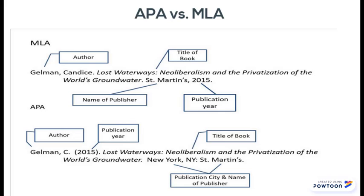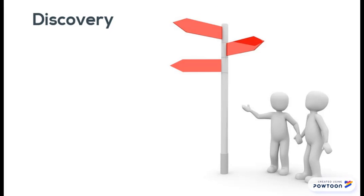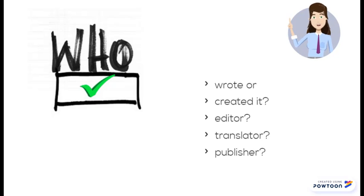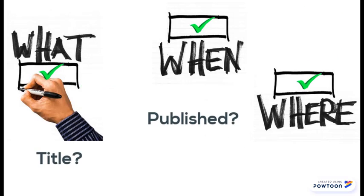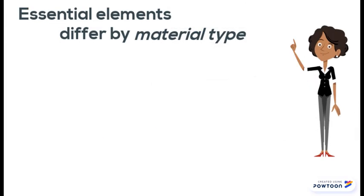At the end of the day, no matter how the elements are arranged, the point of a citation is discovery. You're giving your reader the information they need to track your source down and read it for themselves — such as who wrote, edited, translated, and/or published it, what the title is, and where and when it was published.